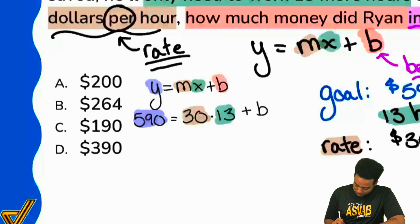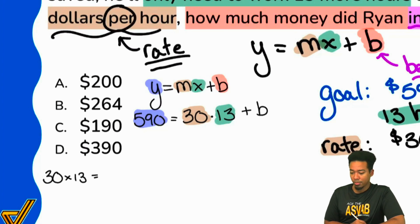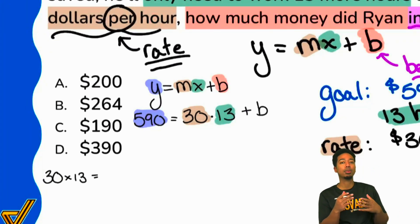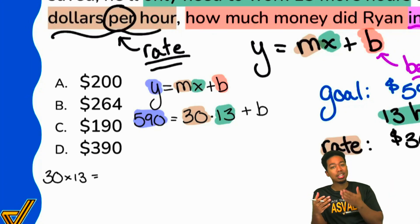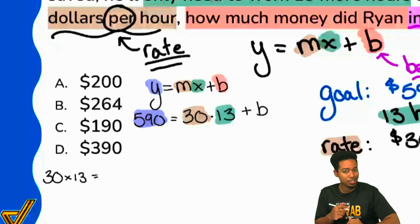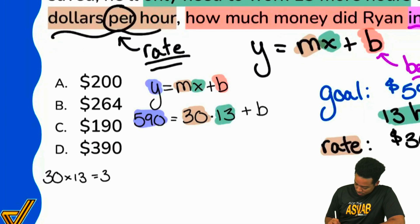My party people, 30 times 13 is what? 390, appreciate you sharing. Remember, when you're multiplying by a number that is a multiple of 10, ignore the 0. 13 times 3 is 39, bring that 0 back, 390, and we're good. So we have ourselves 390. This turns into 590 equals 390 plus b.